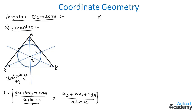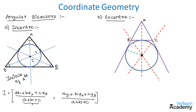Under the same concept, let us discuss the excenter. The bisector of internal angle A and the bisectors of external angles B and C are concurrent, and this point of concurrency is called the excenter, denoted by I1. It is equidistant from side BC as well as from the extensions of sides AB and AC. This distance is called the exradius, denoted by r1. The circle drawn with I1 as center and r1 as radius touches all three sides and is called the excircle opposite to vertex A. Similarly, there are two more excircles opposite to vertices B and C, giving three excircles in total.